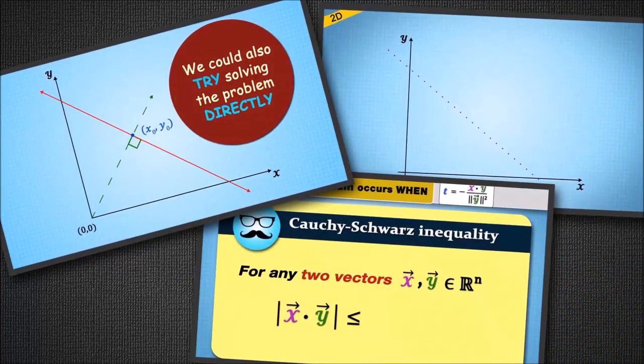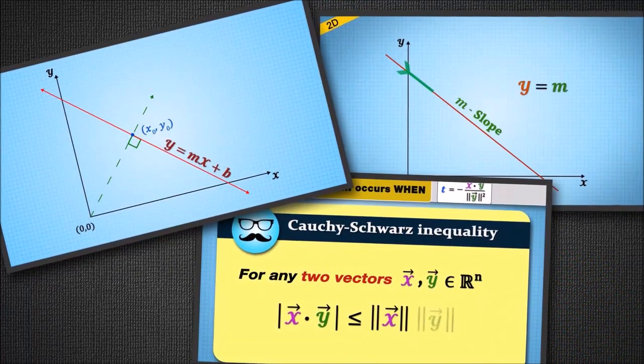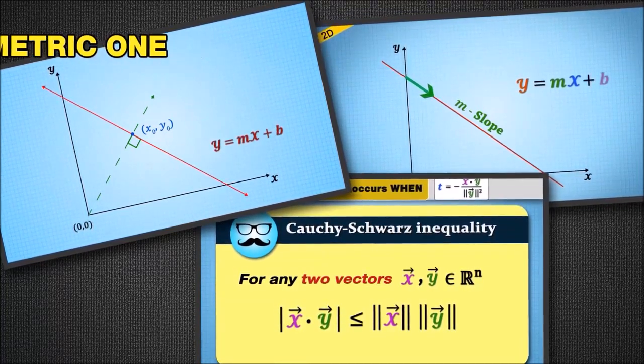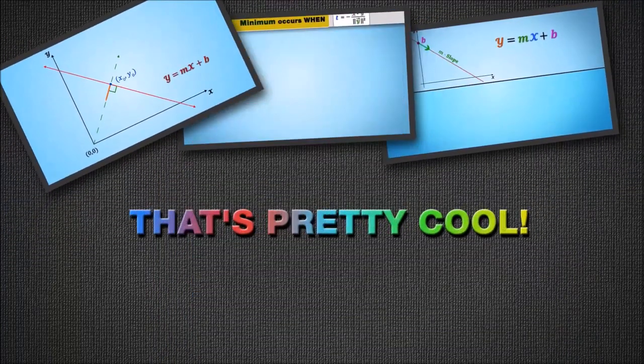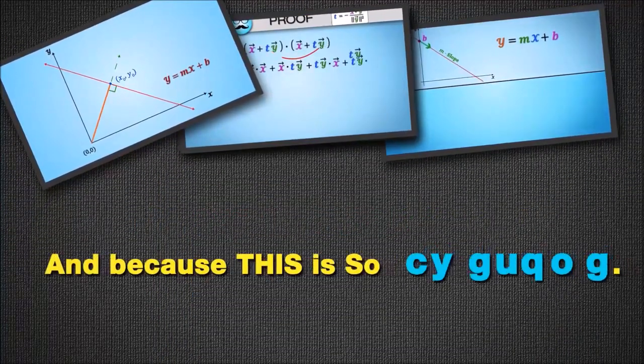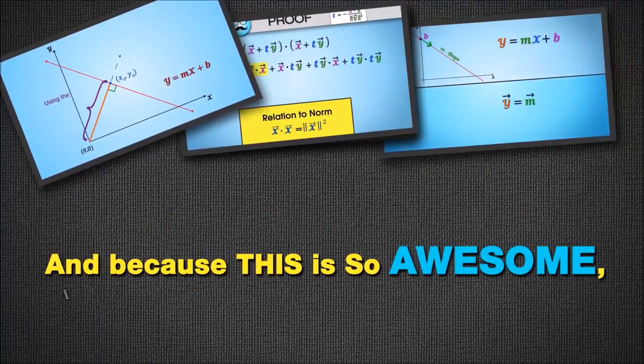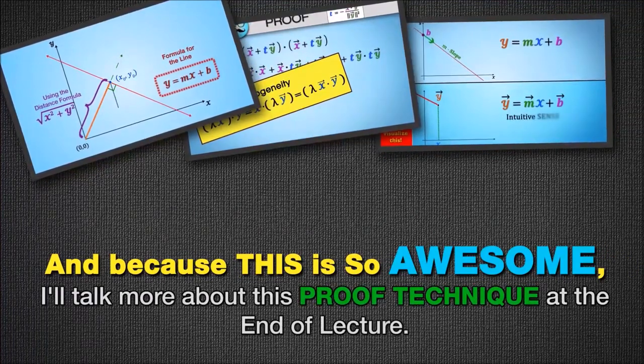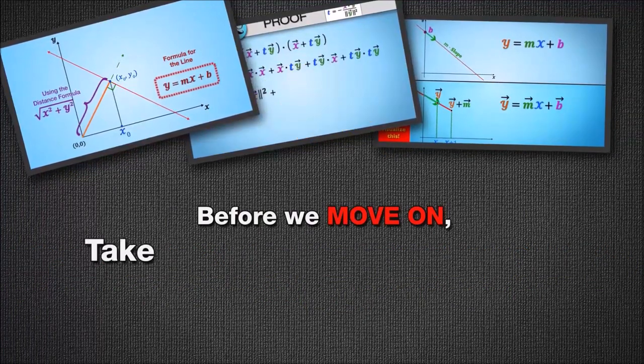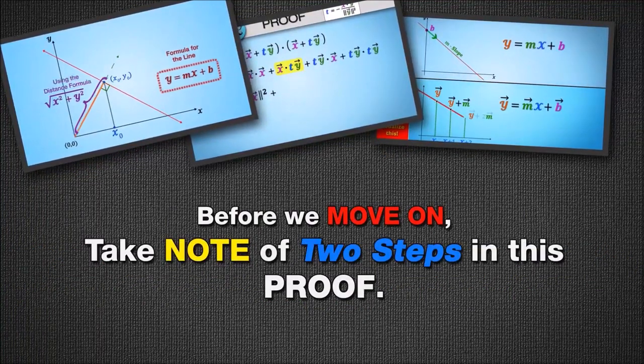Remarkably, we just used a completely different problem, a geometric one, to prove the Cauchy-Schwarz inequality. That's pretty cool. And because this is so awesome, I'll talk more about this proof technique at the end of the lecture. Before we move on, take note of two steps in this proof.